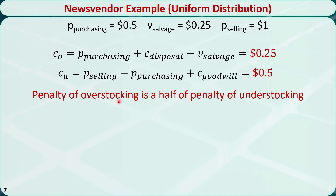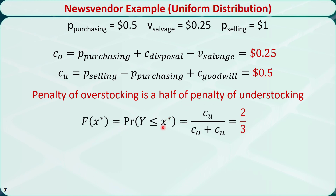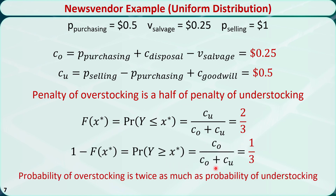That means the overstocking penalty is half of the understocking penalty. Using the formula, the overstocking probability equals 2/3, and the understocking probability equals 1/3. The probability of overstocking is twice as much as the probability of understocking. The reasoning behind this is that because the overstocking cost is less than the understocking cost, we need to determine X* so the vendor will have a larger probability of overstocking than understocking.